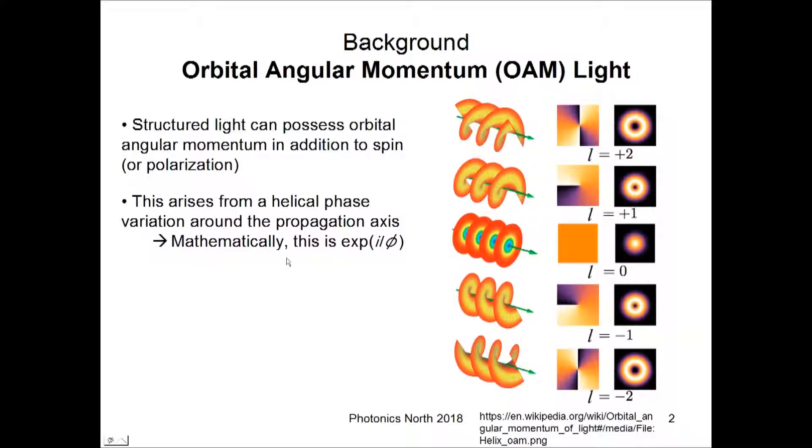This is described mathematically by a helical phase variation around the propagation axis, which comes from the factor e to the iLphi, where Lh bar is the amount of OAM, and phi is the azimuthal coordinate.